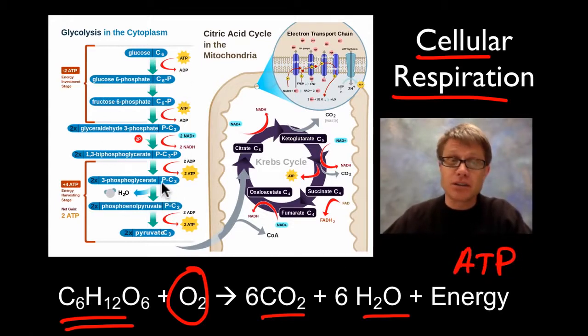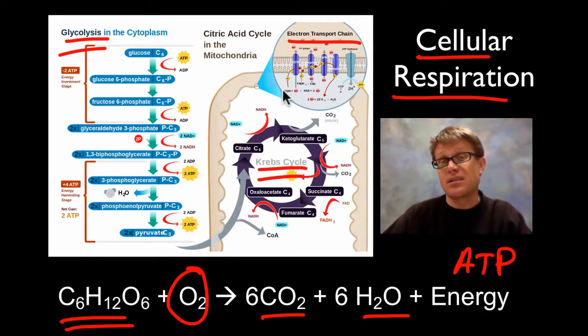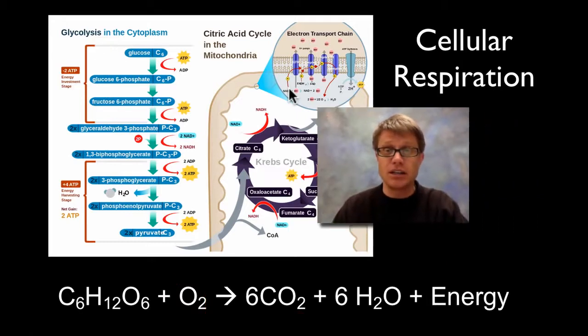Remember there are three different steps. We have glycolysis which is going to occur outside of the mitochondria. We have the Krebs cycle which occurs inside the mitochondria, we're going to give off carbon dioxide and produce NADH and FADH2. And then finally we have the electron transport chain where we're going to use the energy in NADH and FADH2 to make ATP.